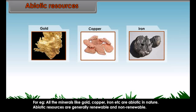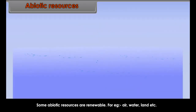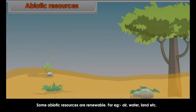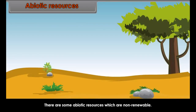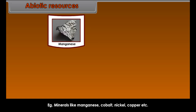Abiotic resources are generally found within the earth's crust and belong to the non-living group. For example, all minerals like gold, copper, iron, etc. are abiotic in nature. Abiotic resources can be renewable or non-renewable. Some abiotic resources are renewable — for example, air, water, land, etc.